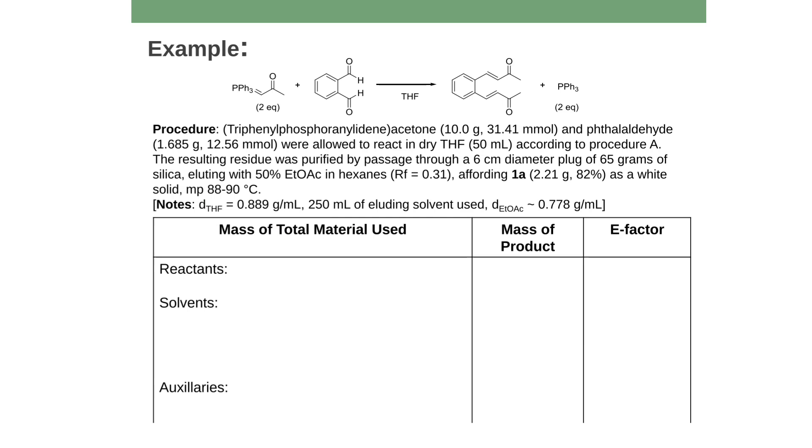So let's look at this example here. I have this Wittig reaction and I have the procedure. I've got one starting material, 10 grams of that and you react it with thalaldehyde, which is 1.685 grams and they were allowed to react in dry THF, 50 milliliters of it, according to a procedure written somewhere else. The resulting residue was purified by passage through a six centimeter diameter plug. So someone did column chromatography and they used 65 grams of silica and they eluted it with this one-to-one, this 50% ratio of ethyl acetate and hexanes to give the compound apparently 2.12 grams of it as a white solid. And then I made notes that the density of THF is 0.889 grams per milliliter because I need to know the mass of everything that I use, but you measure out solvents by volume.